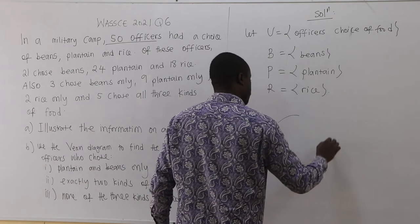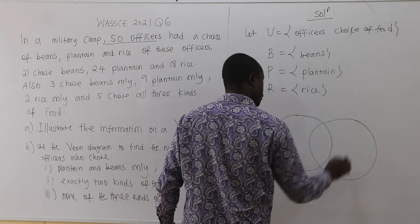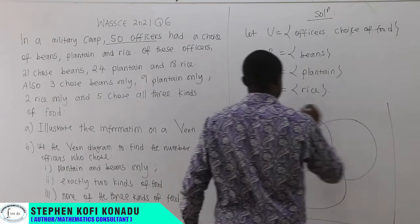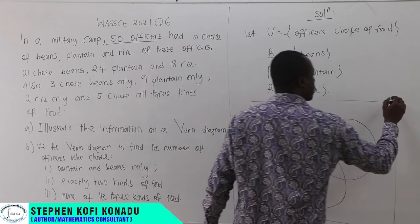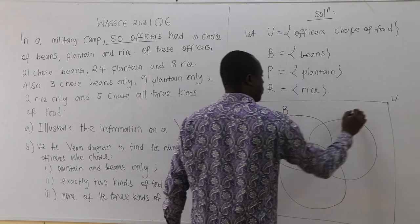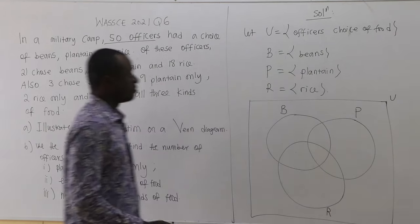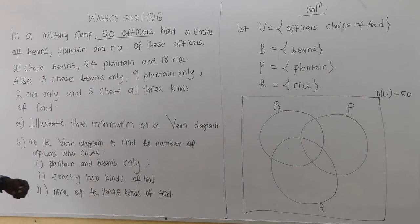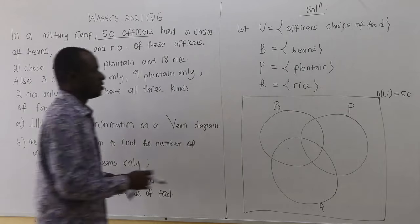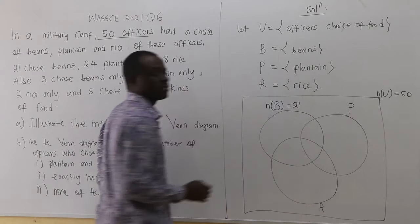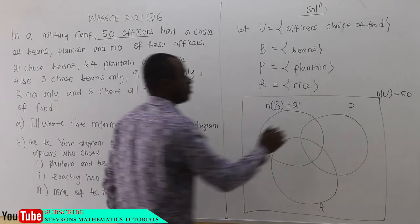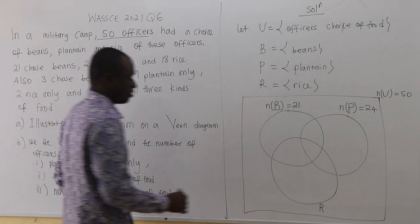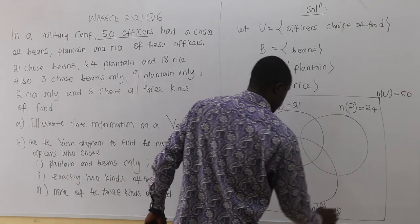Now, let's draw our Venn diagram. That's three sets. So this is the universal set U. We have B, let's say this is P, and then this is R. Our number of U is 50. From the question, 50 officers had a choice. We mean 21 chose beans, so number of B is 21. Number of P is 24. Number of R is 18.